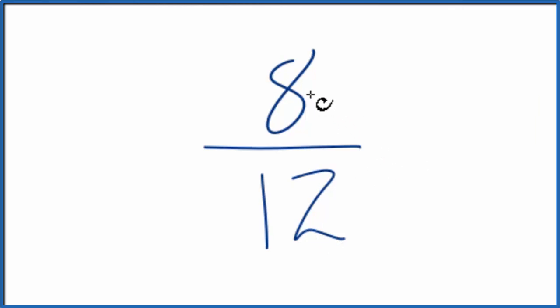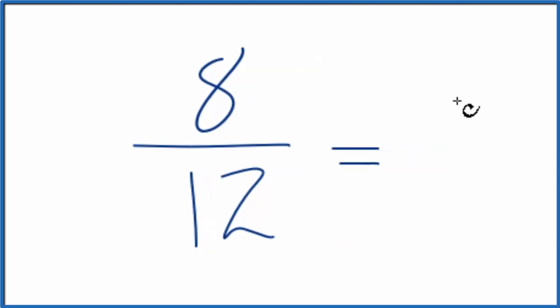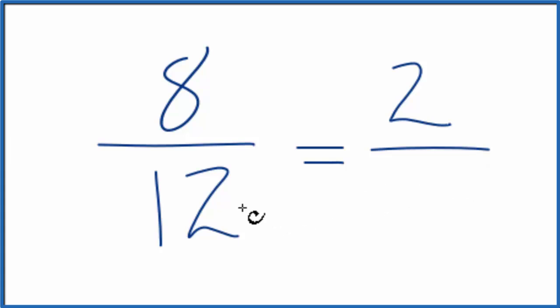I know that 4 goes into 8 twice and goes into 12 three times. So if I divide 8 by 4, that's 2. If I divide 12 by 4, I get 3.